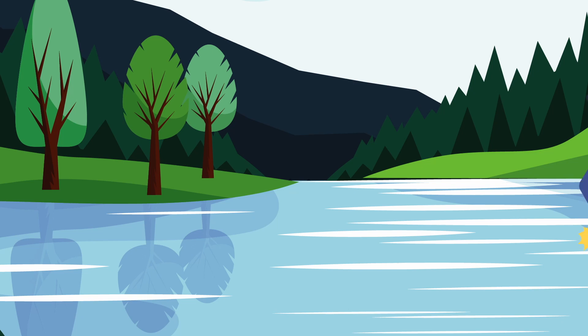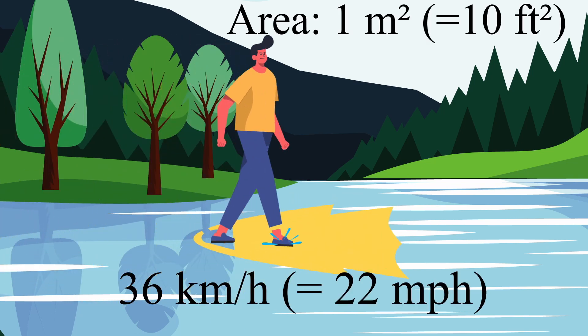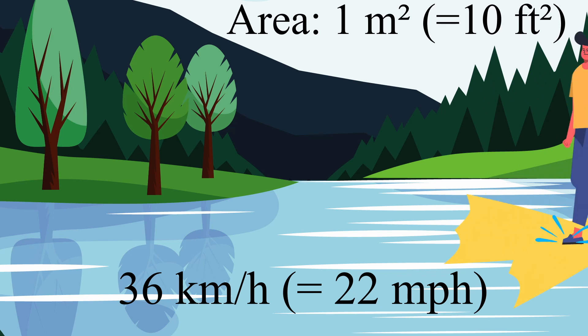If you use fins to increase the area of your feet, you don't have to go as fast. The only problem is that a person who can run 36 km per hour needs fins with the area of 1 square meter.